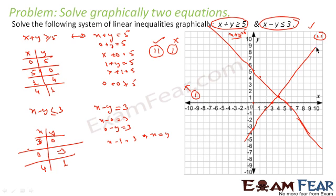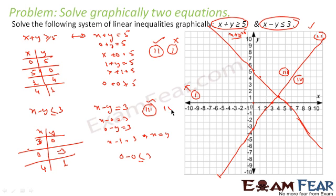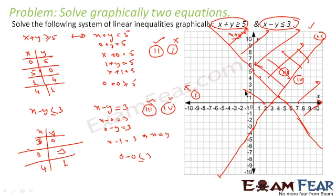Again the line divides the plane into two regions, region 3 and region 4. We test the point (0, 0) in region 3: 0 minus 0 is less than or equal to 3, which is correct. So region 3 satisfies the condition and region 4 does not. Now region 2 satisfies for the first line and region 3 satisfies for the second line. The common area between region 2 and region 3 is the solution.